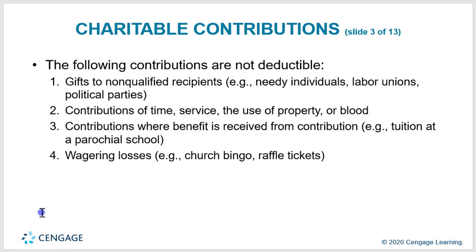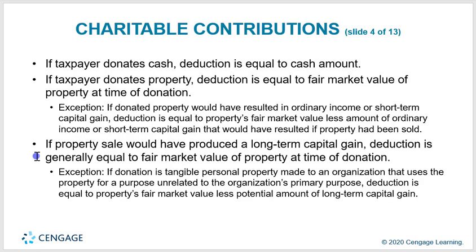Non-deductible contributions include gifts to non-qualified recipients such as needy individuals, labor unions, and political parties; contributions of time, service, use of property, or blood; contributions where a benefit is received such as tuition; and wagering losses such as bingo or raffle tickets. If the taxpayer donates cash, the deduction equals the cash amount. If property is donated, the deduction equals the fair market value at the time of donation. If the property sale would have produced a long-term capital gain, the deduction is generally equal to the fair market value of the property at the time of donation.